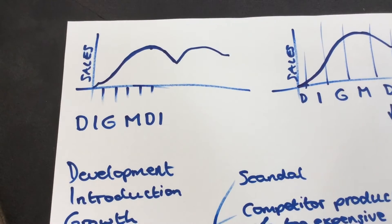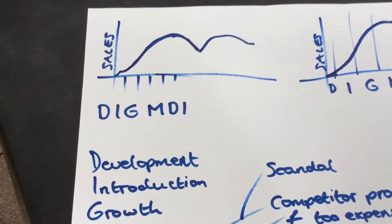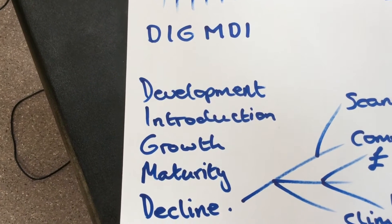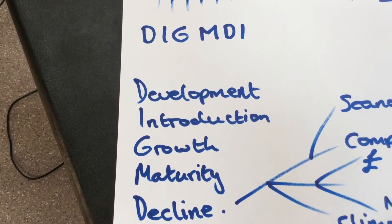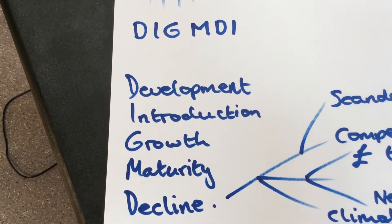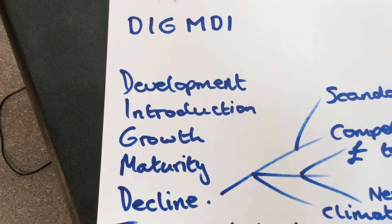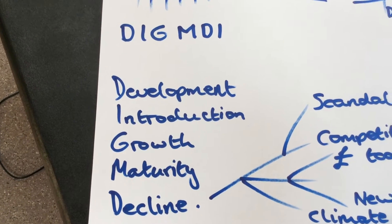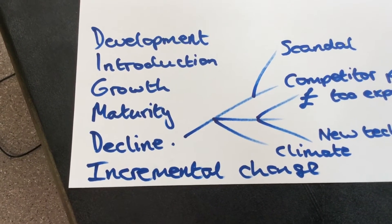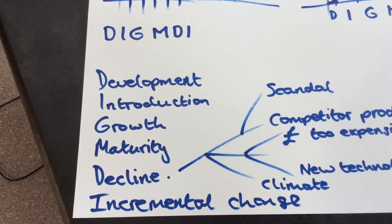This first sheet is about the product lifecycle. If you can remember 'DIG MY DOG', where D is development, I is introduction, G is growth, M is maturity, and D is decline. You'll also find there's an I on the end, and that I stands for incremental change. Let's look at each of the sections.